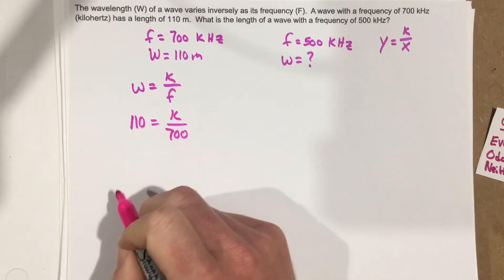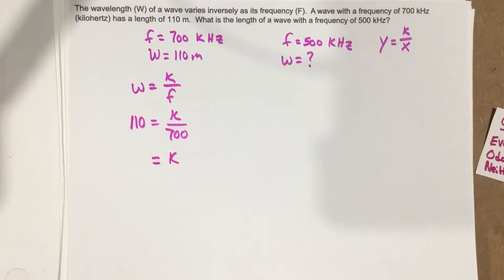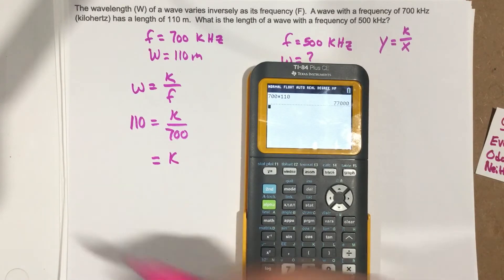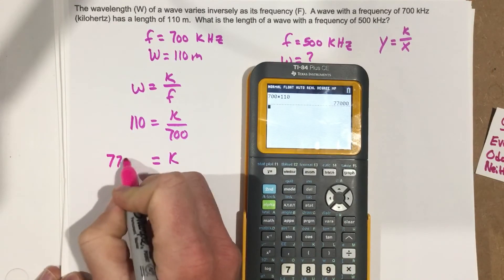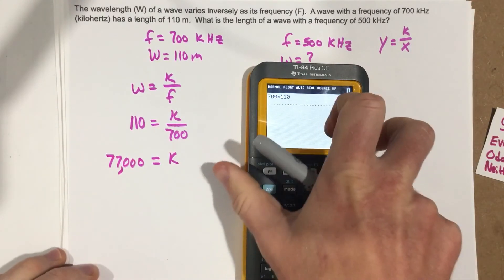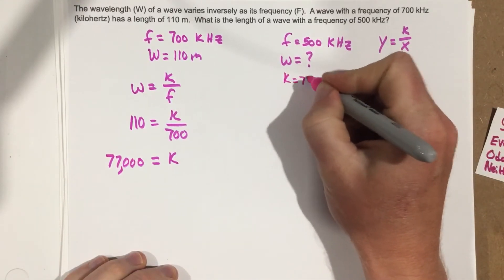I'm going to multiply by 700. When I do that, I get k equals 700 times 110. So 700 times 110 gives you 77,000. And that's our constant of proportionality right there. So 77,000 is what we're going to use for the k value in this equation.